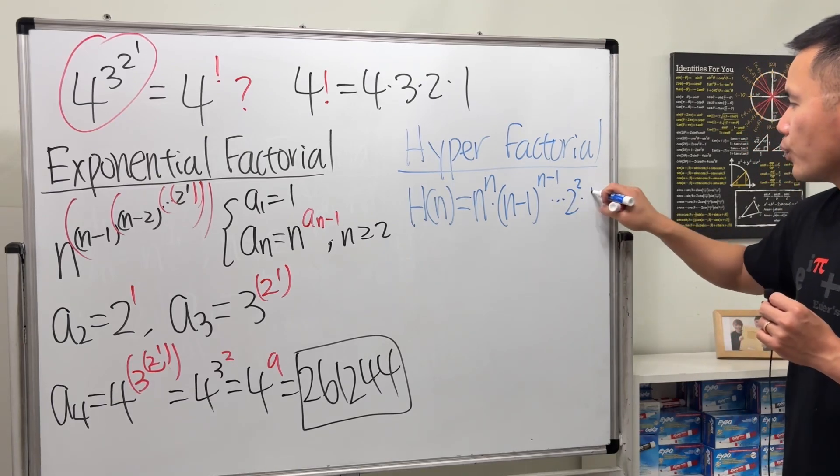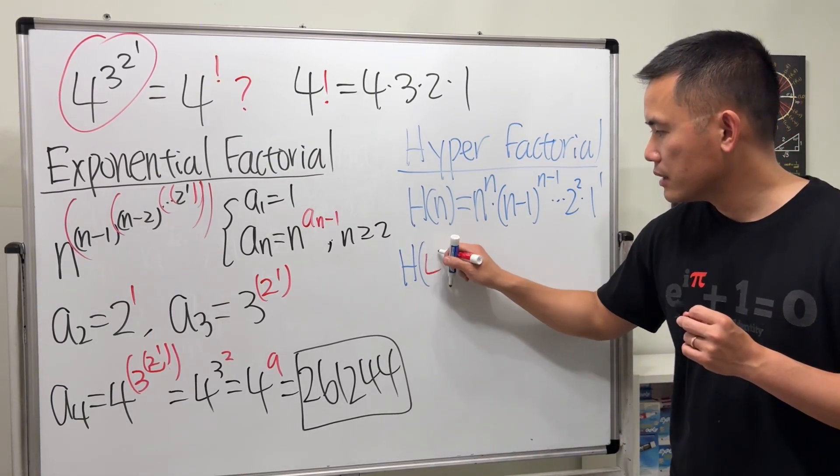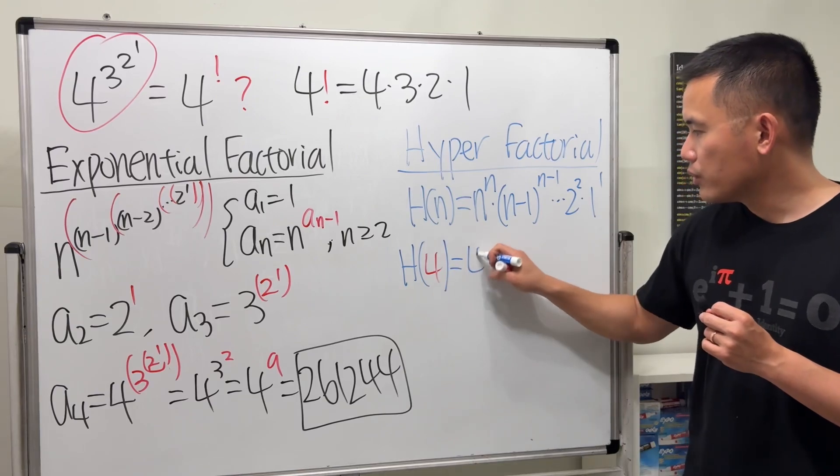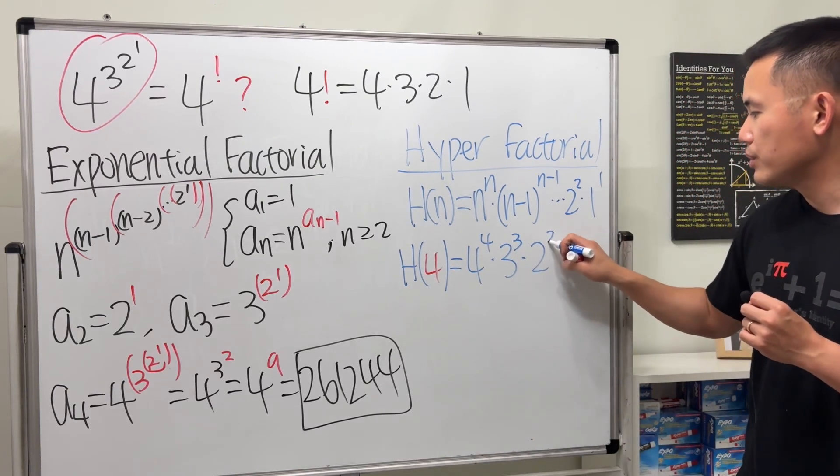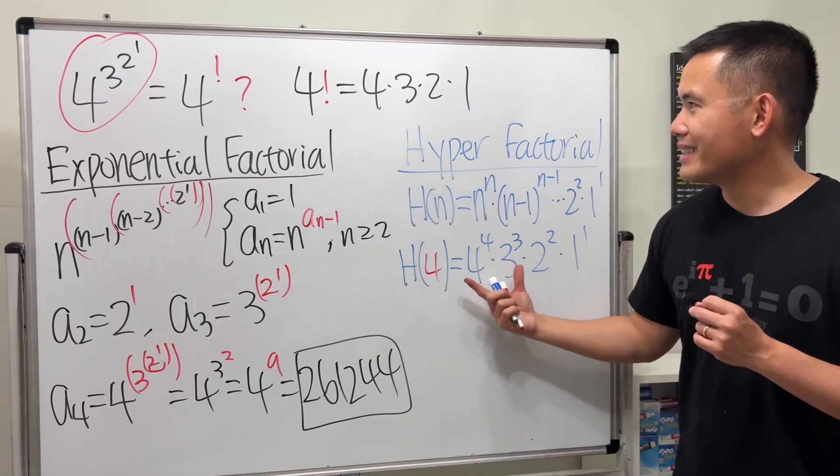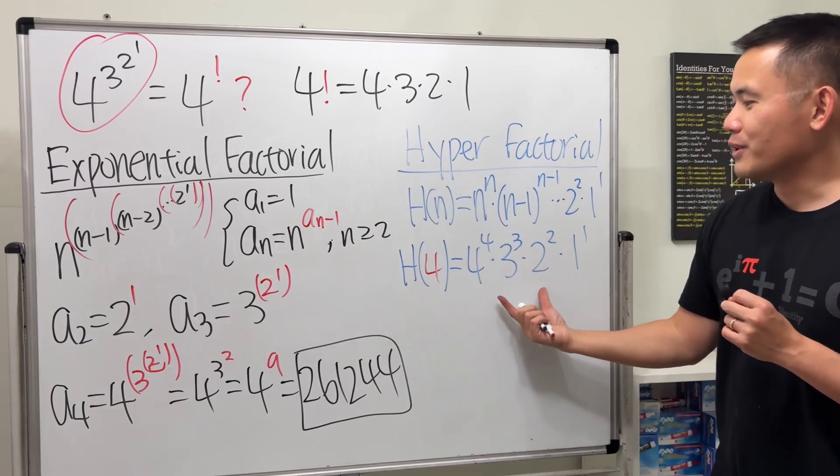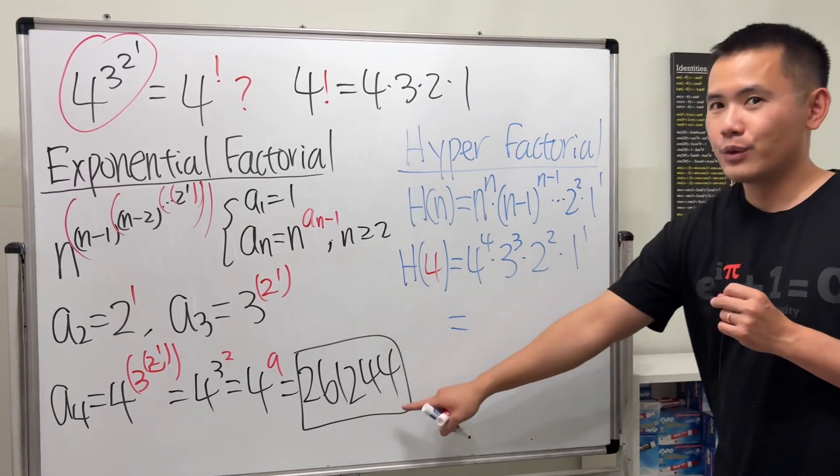So for example, if we have H of four, this means four to the four times three to the third times two to the two times one to the one, which is like a wow version of that, right? And if you work this out, which one is bigger?